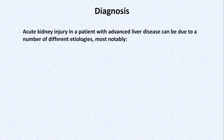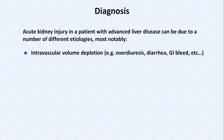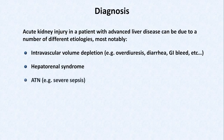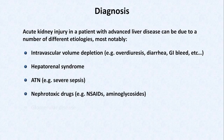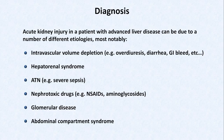Despite the existence of objective diagnostic criteria, diagnosing HRS can be challenging because the type of patient prone to HRS is sick enough to develop basically any kind of acute kidney injury. The most notable etiologies of AKI in patients with advanced liver disease include intravascular volume depletion (such as from overdiuresis, diarrhea, or GI bleed), hepatorenal syndrome, ATN as seen in severe sepsis, nephrotoxic drugs, and glomerular diseases. One additional etiology frequently not mentioned is abdominal compartment syndrome, in which high intraperitoneal pressure from tense ascites impairs renal blood flow.